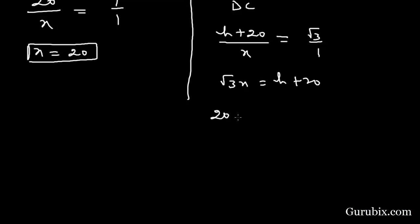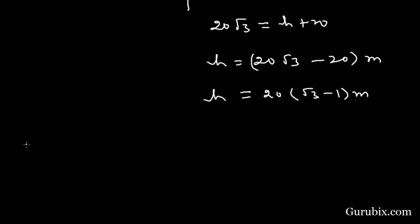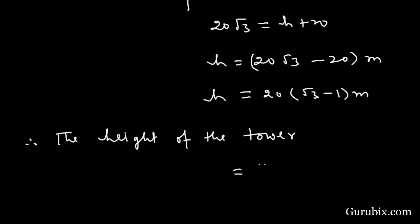Substituting x equals 20, we get h equals 20 root 3 minus 20 meters, which is 20 times (square root of 3 minus 1) meters. Therefore, the height of the tower h equals 20(√3 − 1) meters. This is the solution of the question. Thank you.